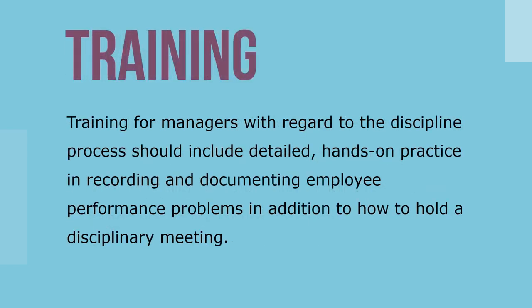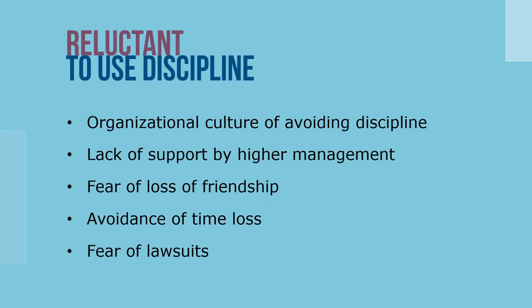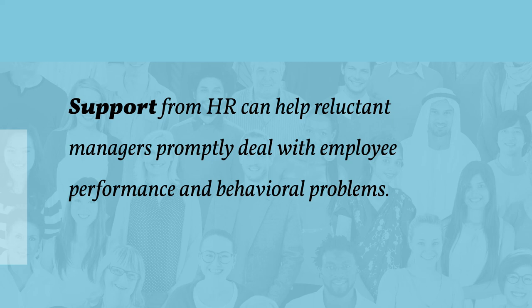Training for managers with regard to the discipline process should include detailed, hands-on practice in recording and documenting employee performance problems, in addition to how to hold a disciplinary meeting. Managers may be reluctant to use discipline for many reasons, including organizational culture of avoiding discipline, lack of support by higher management, fear of loss of friendship, avoidance of time loss, and fear of lawsuits. Support from human resources can help reluctant managers promptly deal with employee performance and behavior problems, and as part of their own performance expectations, managers should be held accountable for enforcing all organizational policies.